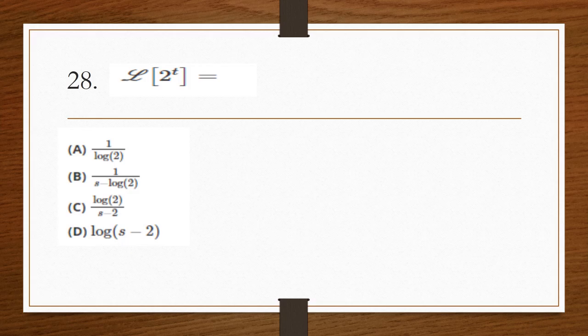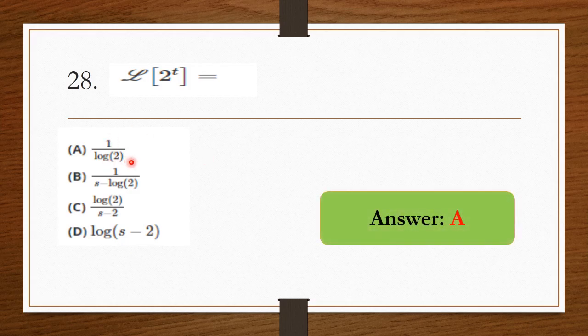The Laplace transform of 2^t — the answer is 1/(log 2 − s). Option A is the right answer.